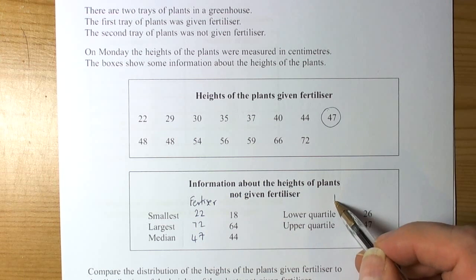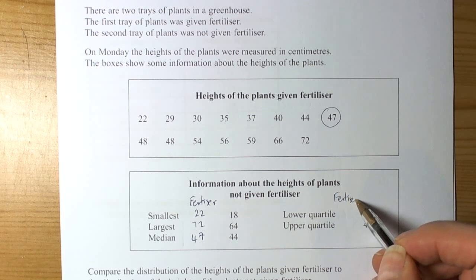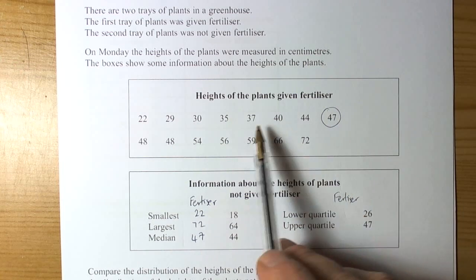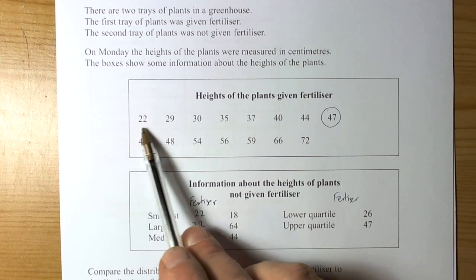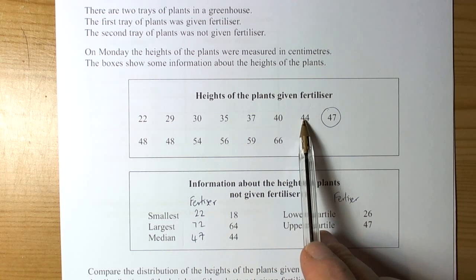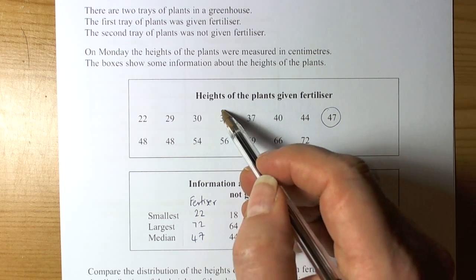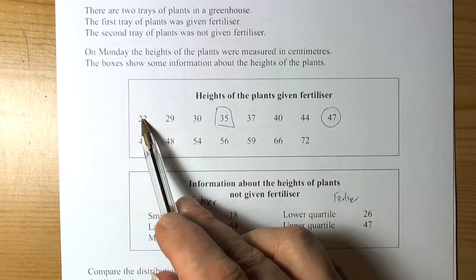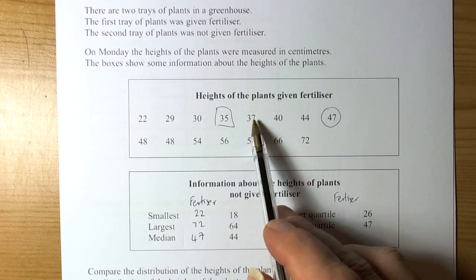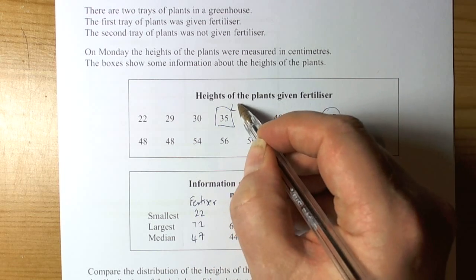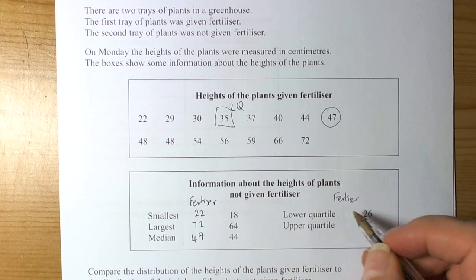The lower quartile for the fertilized data - this is a quarter of the way through your data. Since there are 7 data points below the middle, the middle of that section, with 3 data points before and 3 after up to the median, would be the lower quartile. That value is 35.